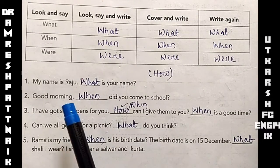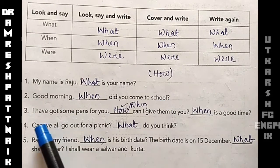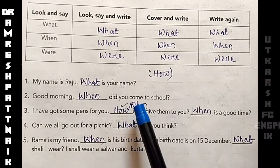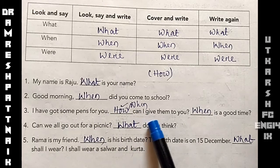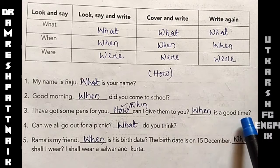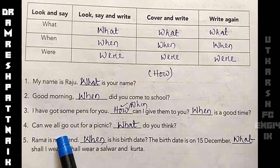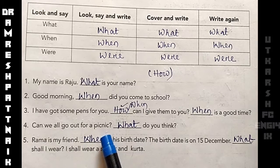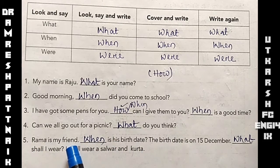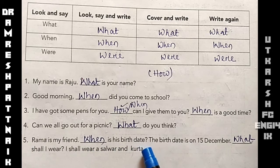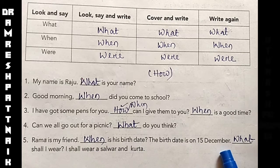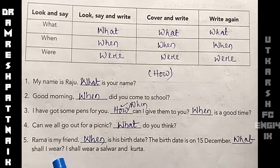By summarizing: my name is Raju — what is your name? Good morning — when did you come to school? I have got some pens for you — when can I give them to you? When is a good time? Can we all go out for a picnic — what do you think? Ram is my friend — when is his birth date? The birth date is on 15th December. What shall I wear? I shall wear a salwar and kurta.